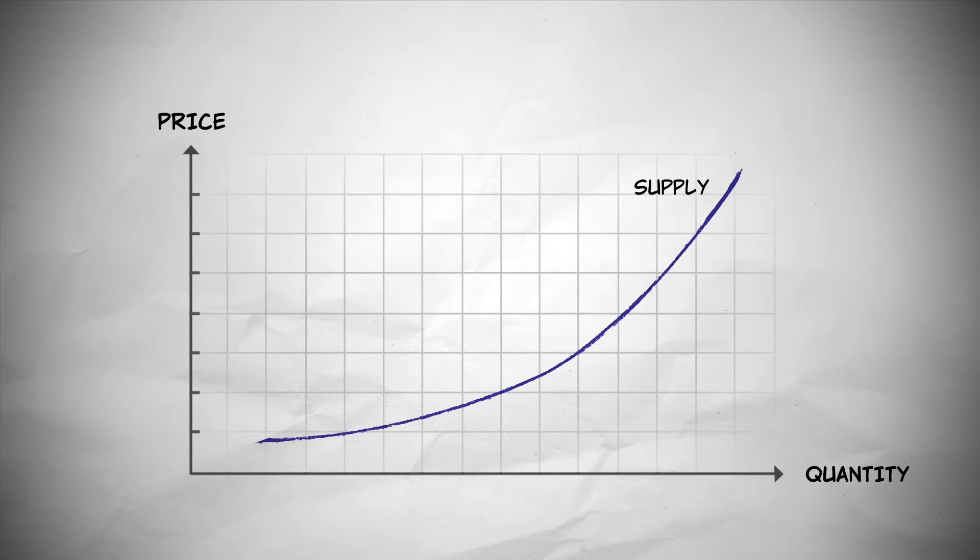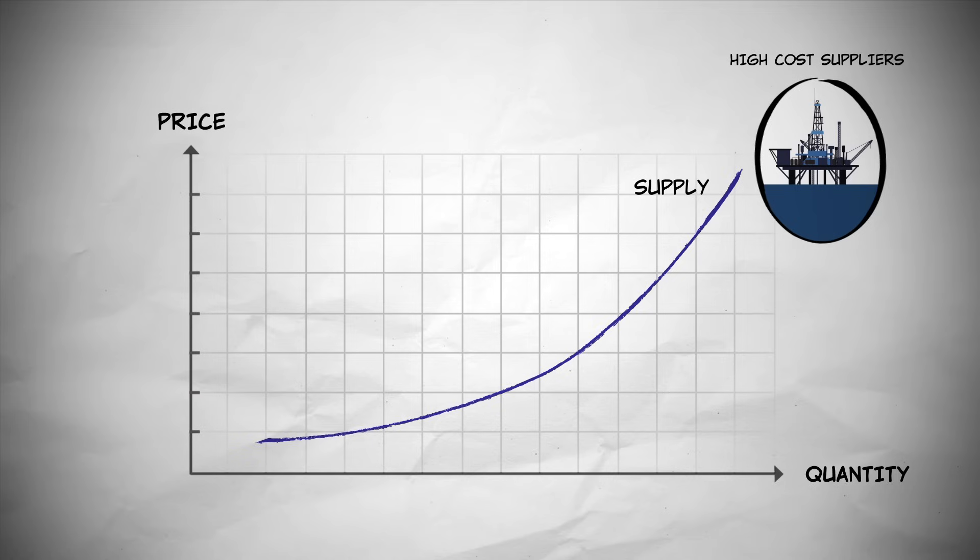With this simple line, the supply curve summarizes the way suppliers respond to a change in price, including how suppliers will enter and exit the market, depending on the price.